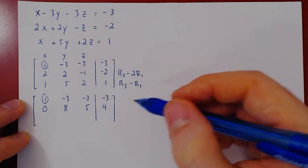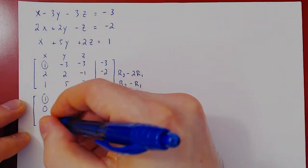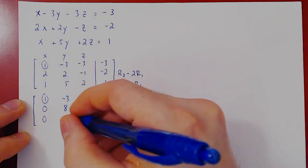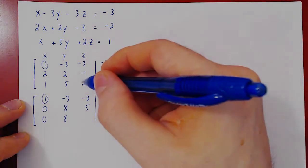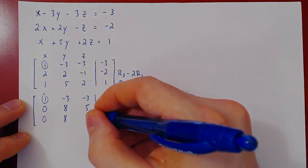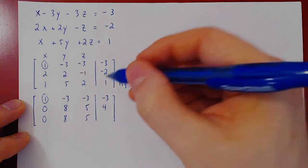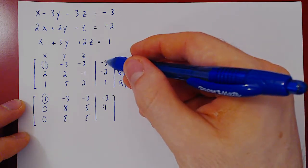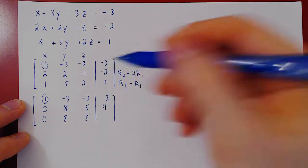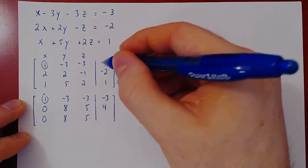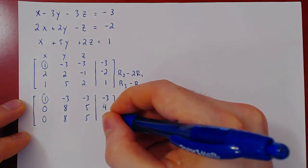Apply the second row operation: 1 minus 1, 0. 5 minus negative 3 is 5 plus 3, 8. 2 minus negative 3 is 2 plus 3, 5. 1 minus negative 3 is 1 plus 3, 4.